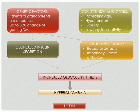Genetic factors: there is a 50% chance of getting diabetes mellitus if there is a family history. Constitutional factors like obesity, hypertension, advanced age, and low physical activity — these all contribute to insulin resistance and decreased insulin secretion. Insulin resistance is mainly due to receptor defects in the tissues or impaired glucose utilization in the body. The receptor does not respond to insulin; impaired glucose utilization means the excess glucose is not utilized properly in the cells.